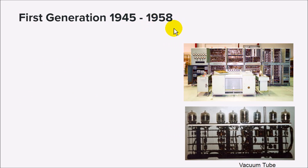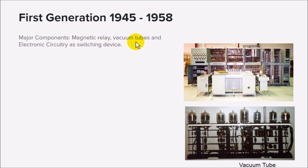Starting with the first generation, ranging from 1945 to 1958, the major component known with the first generation is magnetic wave vacuum tubes and electronic circuitry as switching devices. This is actually what vacuum tubes look like. The first generation used these to store data. Imagine a computer that uses devices as big as this — not just one but many of them — which made the device very large and storage capacity very primitive.